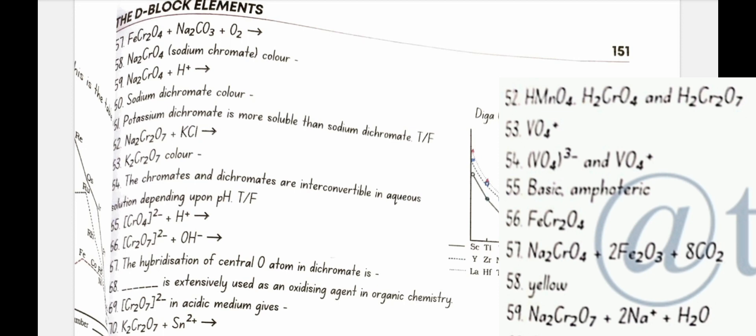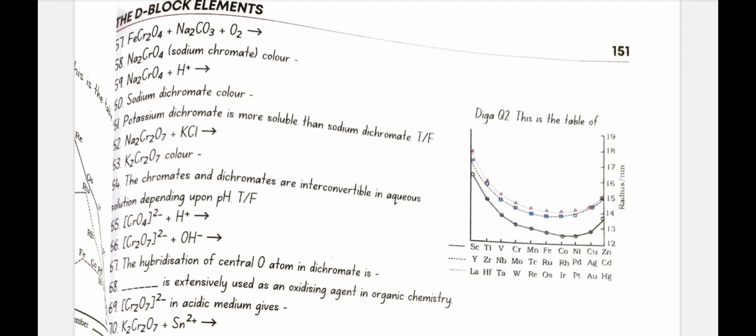Na2CrO4 sodium chromate color is yellow. Na2CrO4 plus H plus gives Na2Cr2O7 plus Na plus plus H2O. Sodium dichromate color is orange.